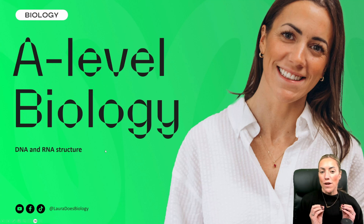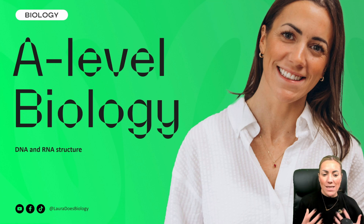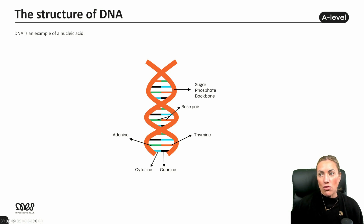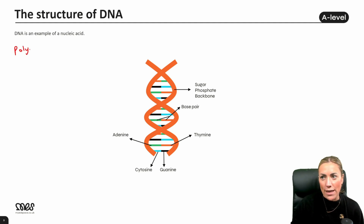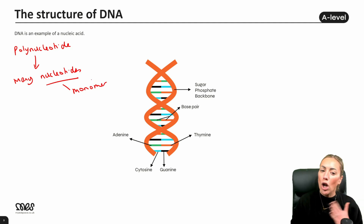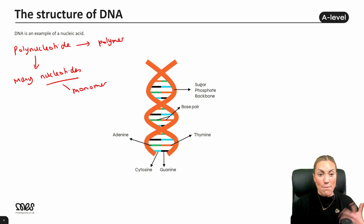For this video we're going to go over the structure of DNA and RNA from biological molecules, module one. These are both nucleic acids and we're going to focus on structure. DNA is a nucleic acid and a polynucleotide, which basically means it's made from many nucleotides. The nucleotide is the monomer — a single unit — but DNA is a polynucleotide because it's made from many nucleotides, making it a polymer.